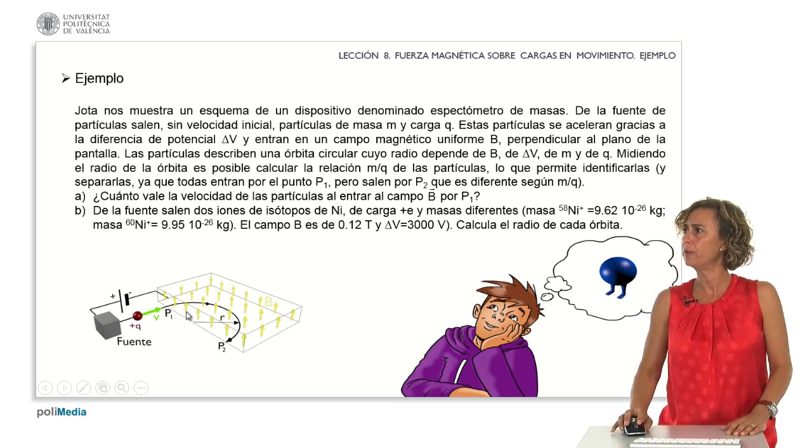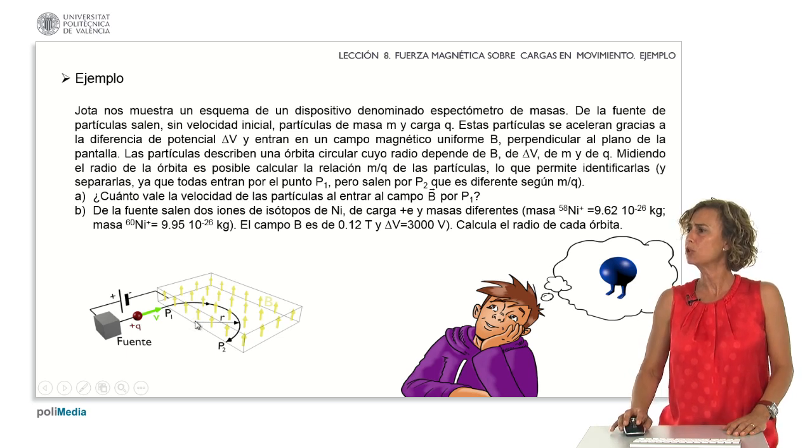The particles describe a circular orbit whose radius depends on B, the increment of V, m, and q. By measuring the radius of the orbit, it is possible to calculate the ratio m over q of the particles, which allows to identify and separate them, since they all enter at point P1.